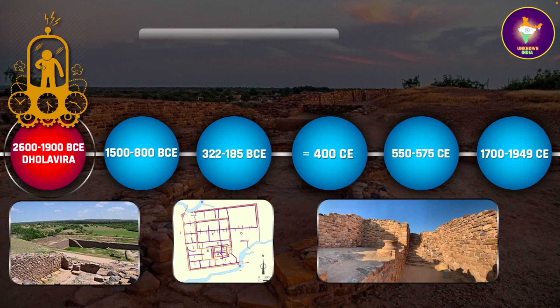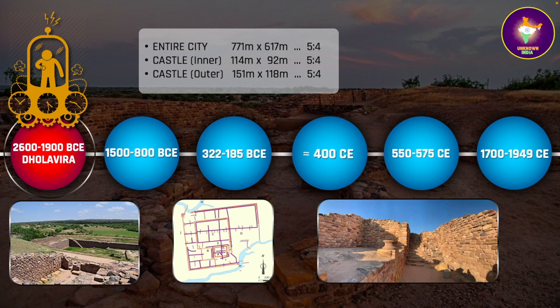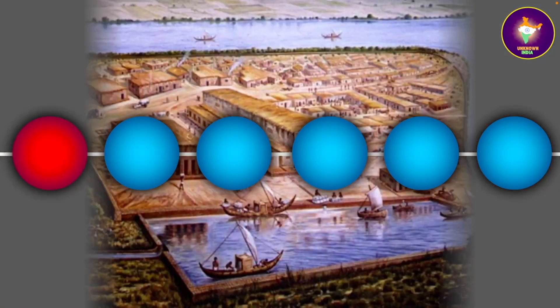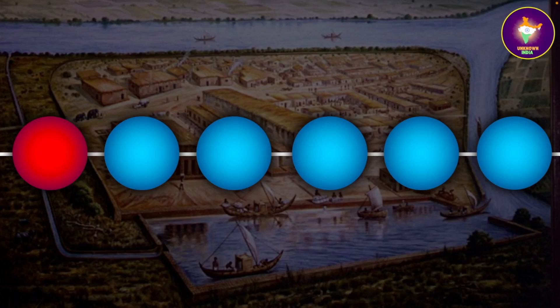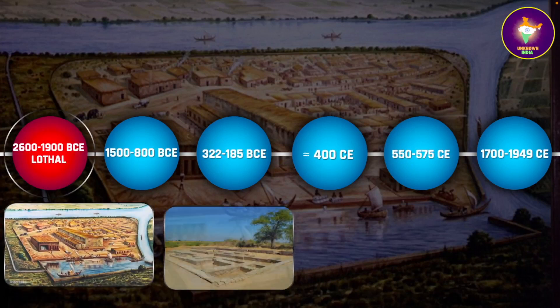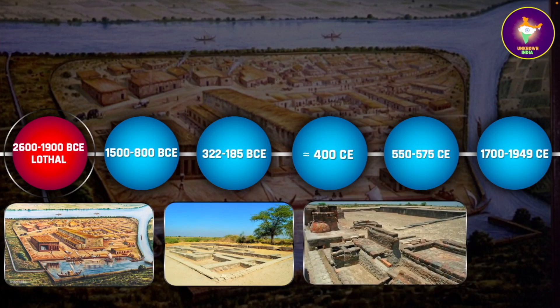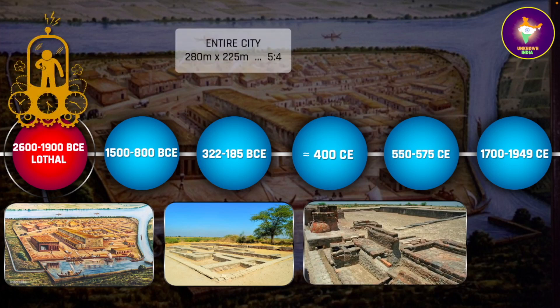Archaeological excavations at Dholavira have revealed this special ratio at play in several of the town's planning and architectural designs. The entire city has dimensions of 771 meters by 617 meters — in the ratio of five to four. Not only that, even the inner and outer castle dimensions follow the same ratio. At another Harappan site, Lothal in the Gulf of Khambhat in Gujarat, the city's overall dimensions of 280 meters by 225 meters also follow the same ratio of five to four.